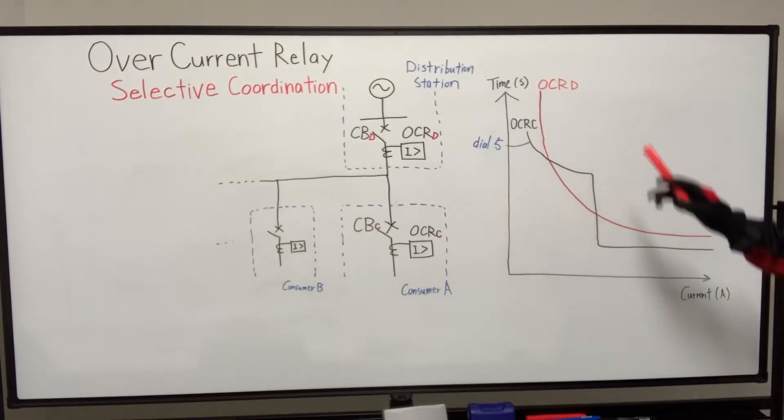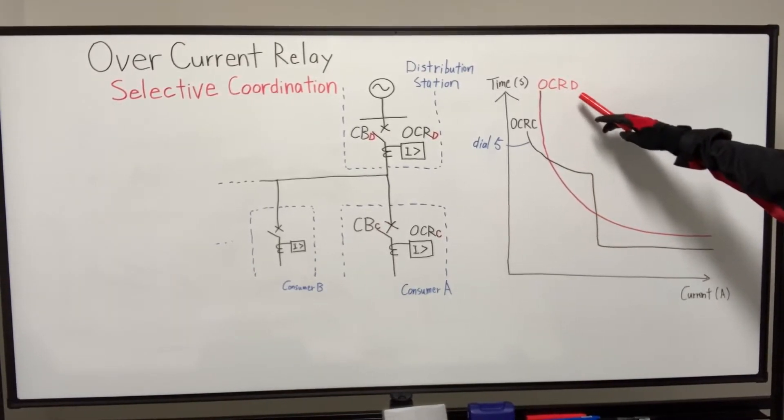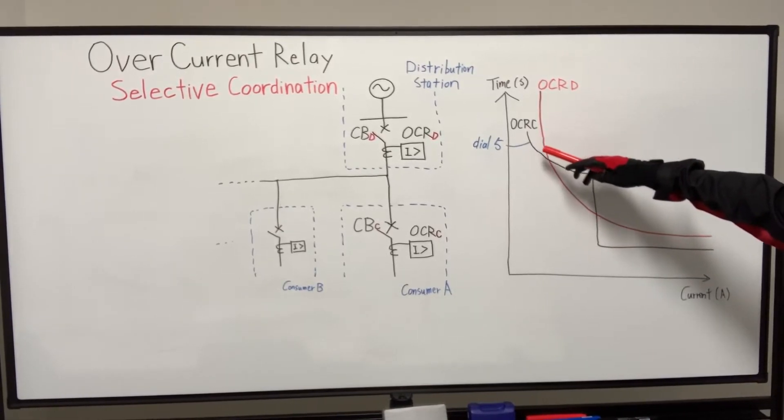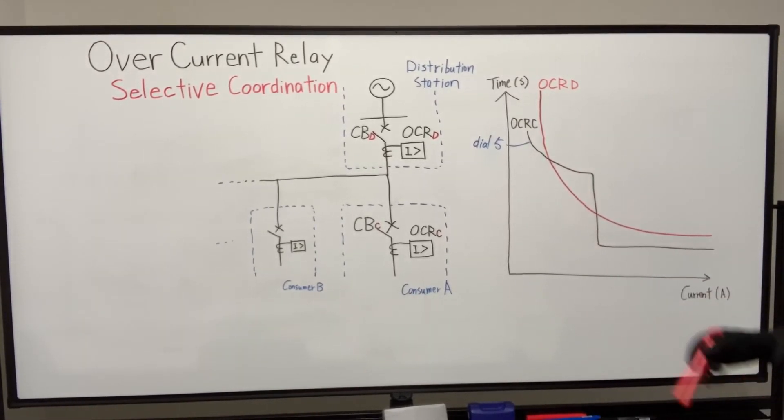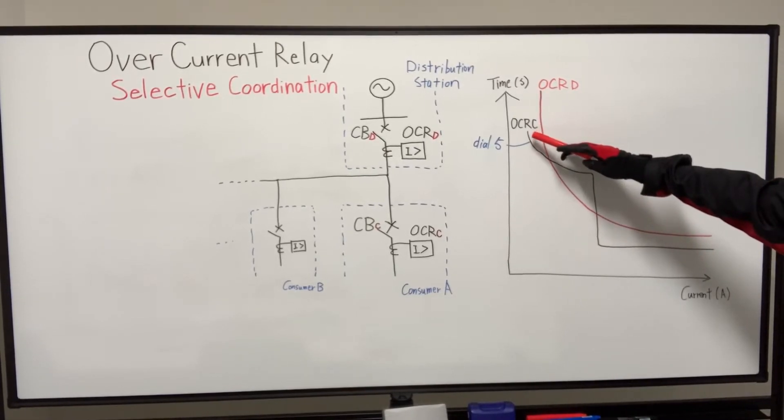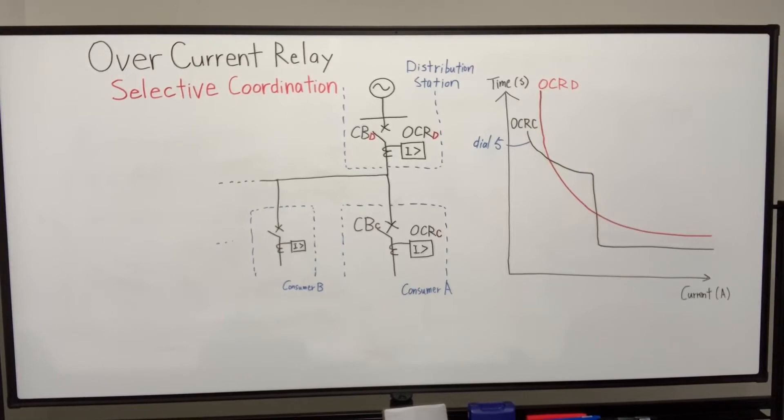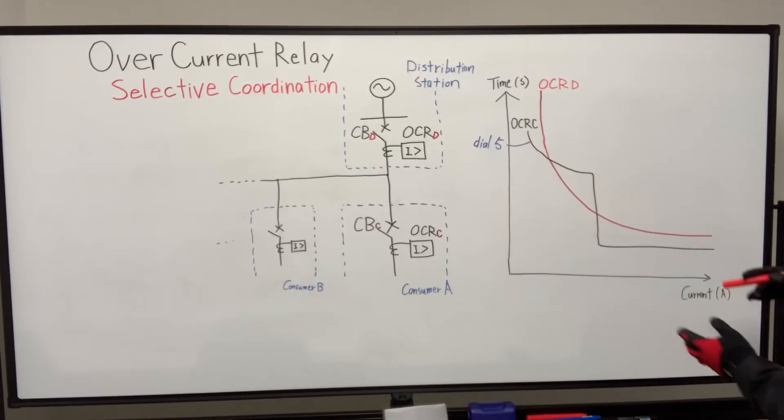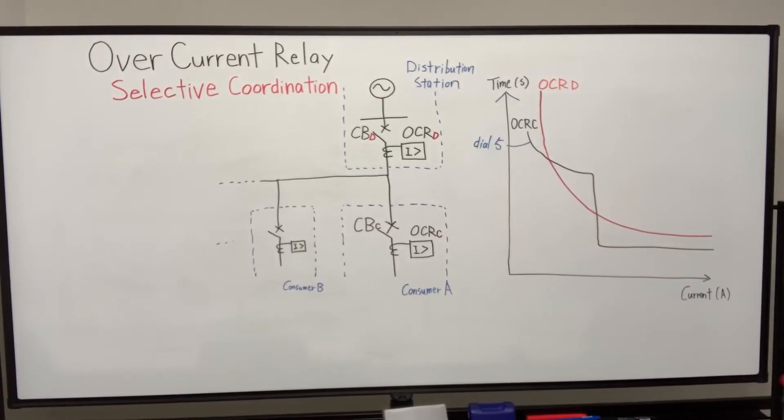So this red line, that curve represents the distribution station's overcurrent relay OCR D. And this black curve is the consumer's, our target overcurrent relay C. And the time dial is setting number five. So in this state, this area, this area is not achieved coordination.